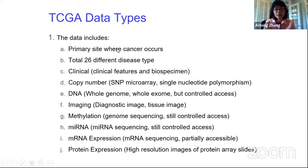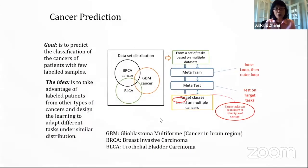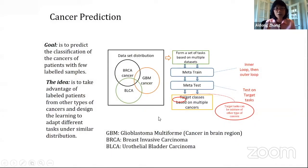The TCGA dataset has different kinds of features — methylation, RNA expression, protein expression. We have been using all these data features to test our model. The goal for cancer prediction using TCGA is to predict cancer classification, taking advantage of patients from different cancer types and designing a learning model that can quickly adapt to the specific cancer you want to predict.